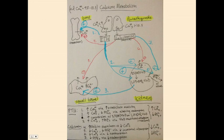Calcitonin is released by the parafollicular C cells of the thyroid in response to calcium greater than 10.5. It has three activities: first, it inhibits osteoclasts — the opposite of PTH; second, it reduces absorption of calcium and phosphate in the small bowel; and third, it reduces reabsorption of calcium in the kidney. It also increases urinary excretion of phosphate, similar to PTH. The net effect of calcitonin is to decrease calcium and decrease phosphate in the serum.